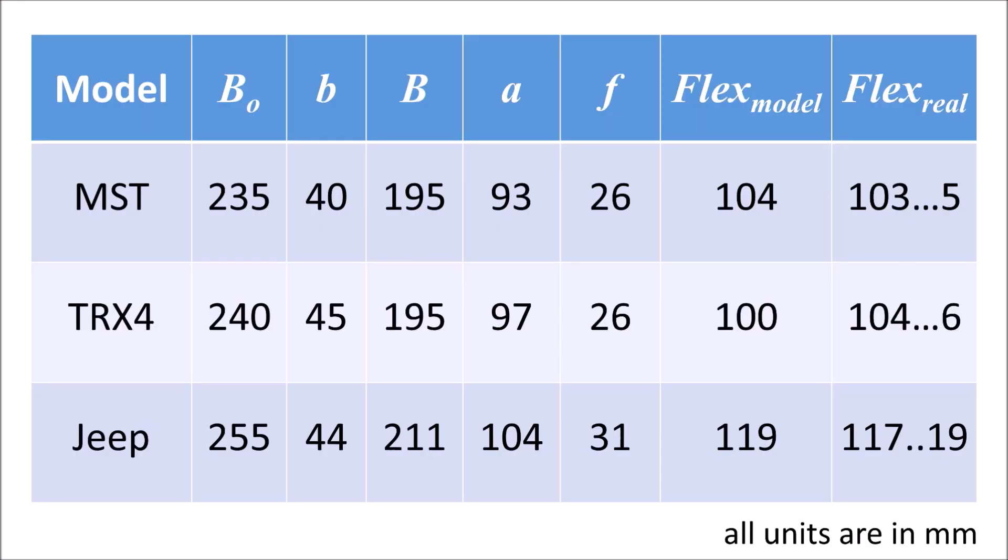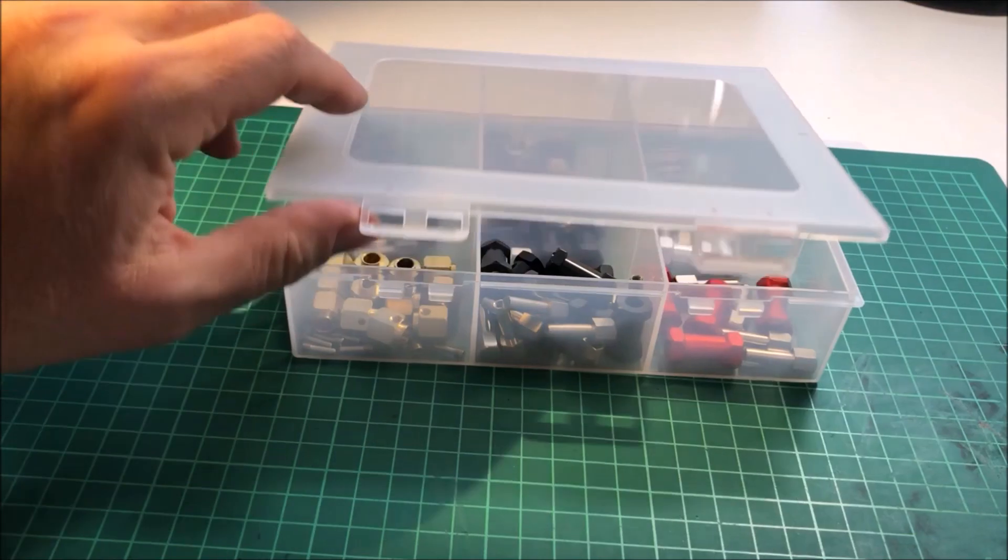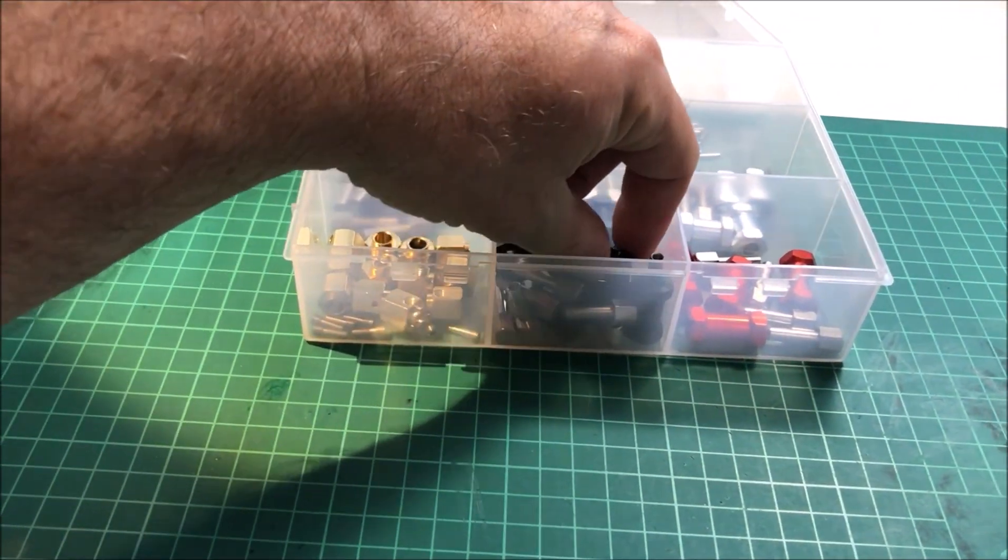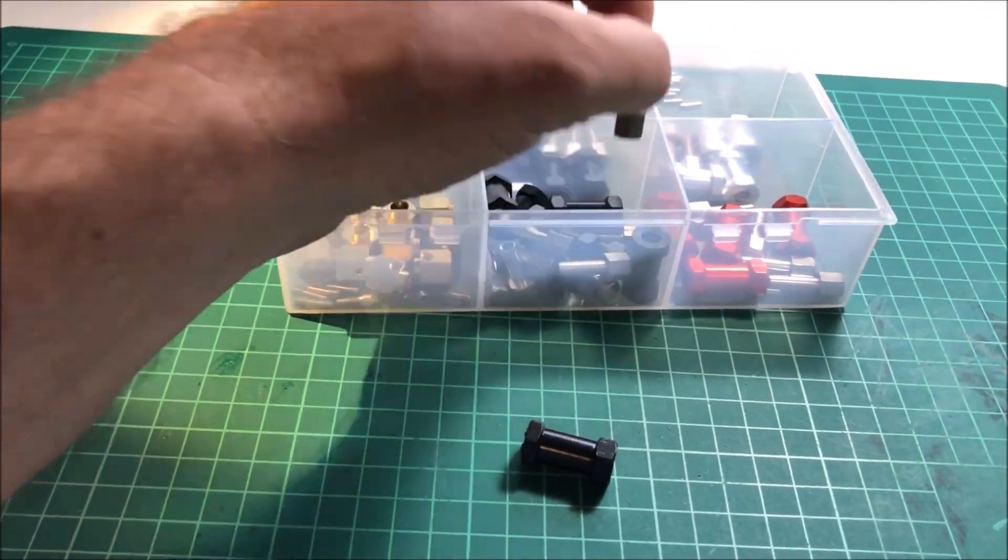As you see, the math model works well to predict the real flex values. This allows us to use the formula to optimize and increase the flex even without further measurements, for example by increasing the lateral wheelbase.